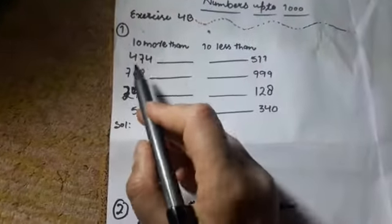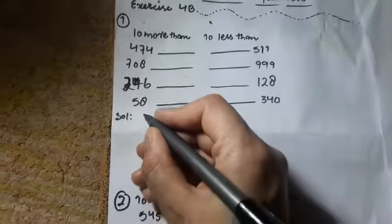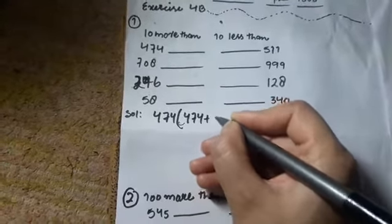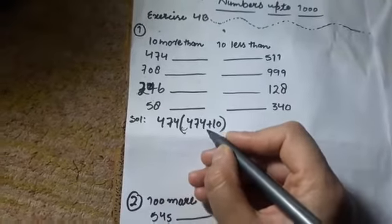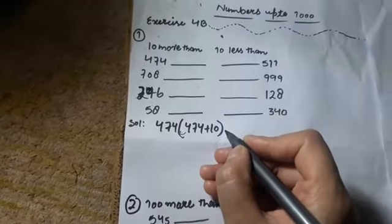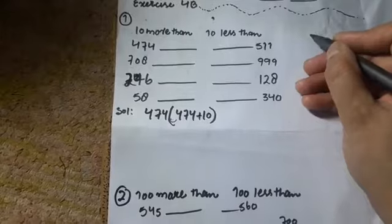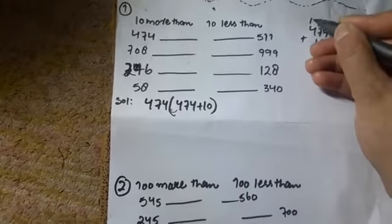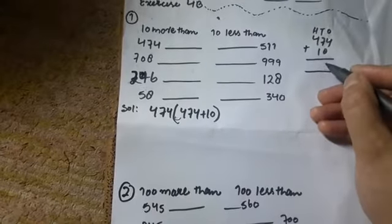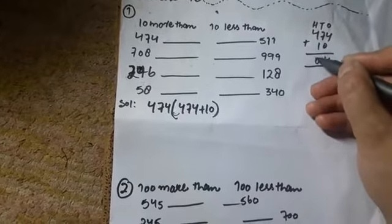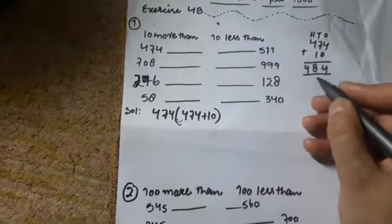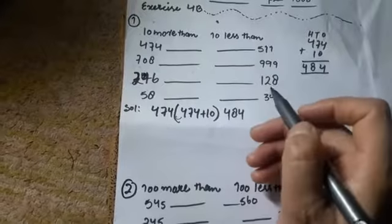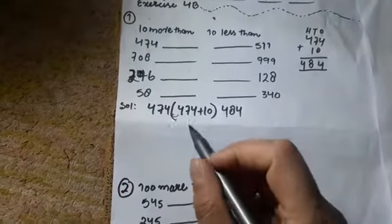474 को plus 10 करते हैं। 1's, 10's, 100's — 4 plus 0 = 4, 7 plus 1 = 8, and this 4. तो क्या बना — 484. जब हमने 474 को 10 add किये तो 484 बना। तो हम यहाँ पर 484 लिखेंगे। ठीक है, तो फिर दूसरा वाला है 708।